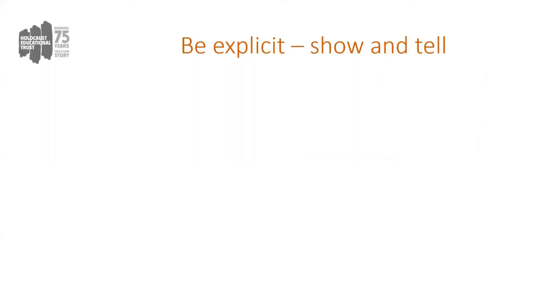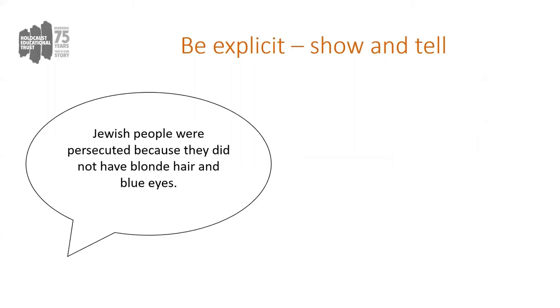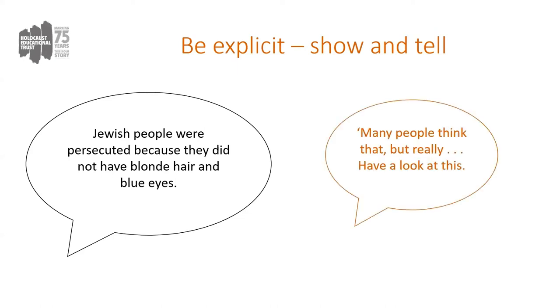If we look at another example of how we can challenge misconceptions, we continue to use those similar principles and we show and tell the speaker what's incorrect about the answer. Here we have a further misconception combining two I shared previously — that Jewish people were persecuted because they did not have blonde hair and blue eyes. Of course incorrect: Jewish people were not persecuted because of what they looked like. They could look like absolutely anything and were persecuted because of who they were perceived to be. So again, we start by being direct but reassuring — 'Many people think that, but really, have a look at this.'